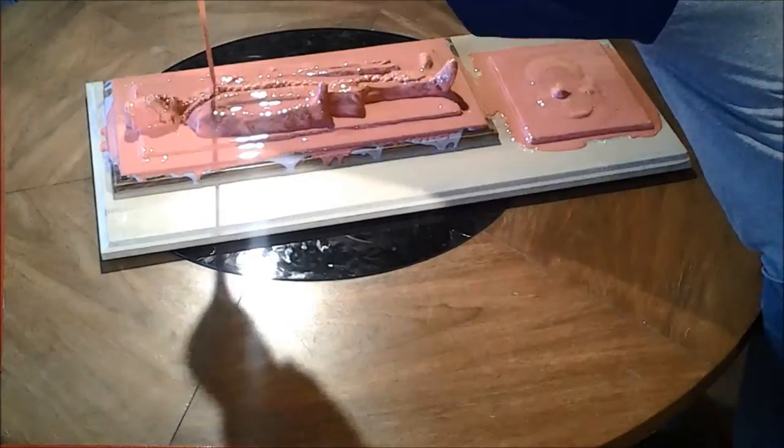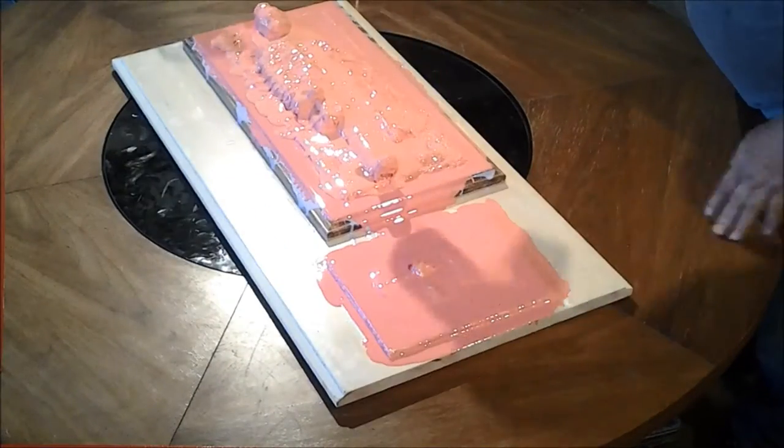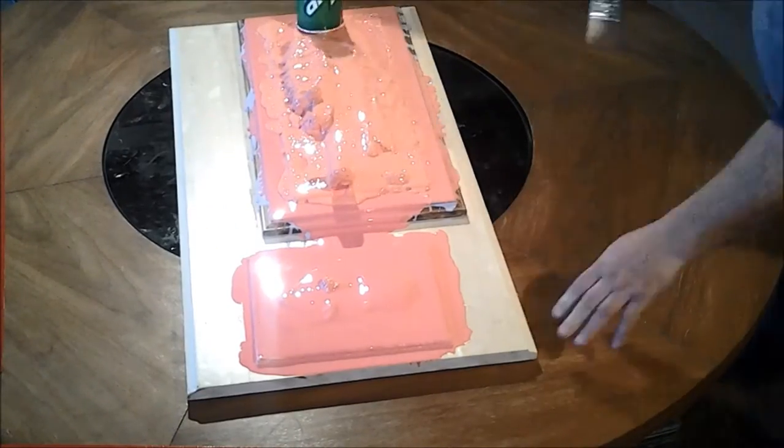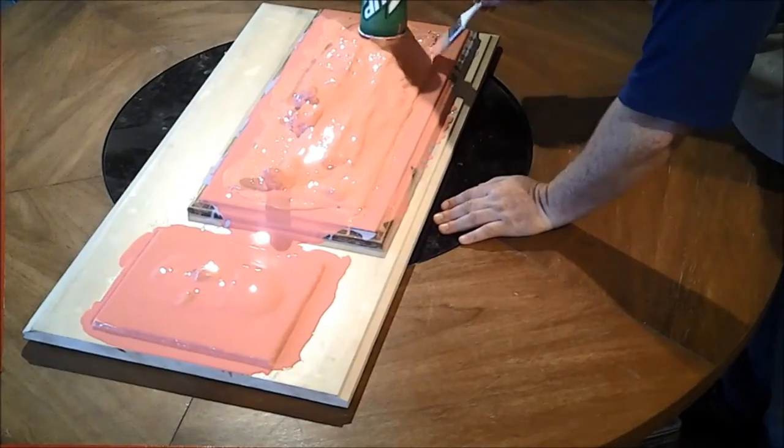On this piece, I decided to do one extra layer just to make sure I had the right thickness, especially over Mr. Lincoln. I wanted to make sure that those high points were covered and it wasn't going to be too thin.